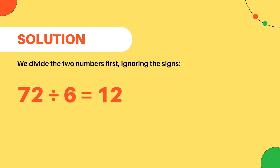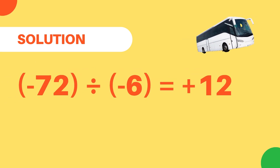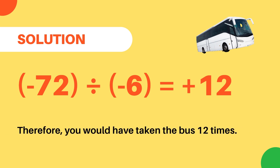To find the solution, we divide the two numbers first, ignoring the signs. So we calculate 72 divided by 6 equals 12. Then, since both numbers in the original problem are negative, we know that our final answer is going to be positive. So the final solution is negative 72 divided by negative 6 equals positive 12. Therefore, you would have taken the bus 12 times.